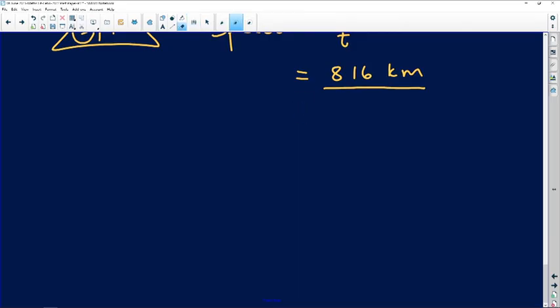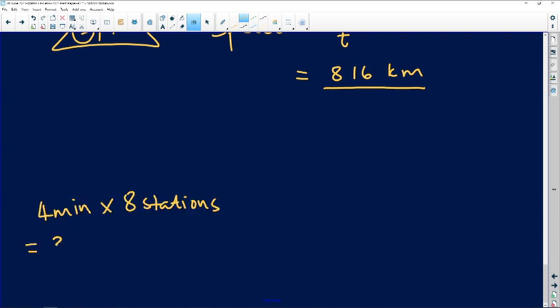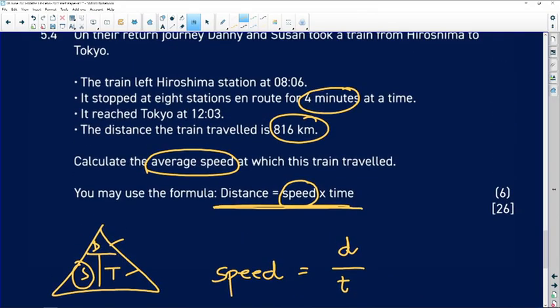On the side here, which is also for marks: four minutes times eight stations. Please show this in your working because it is for marks. So 32 minutes of the entire journey was spent on stopping, so it's not fair for us to use this time.